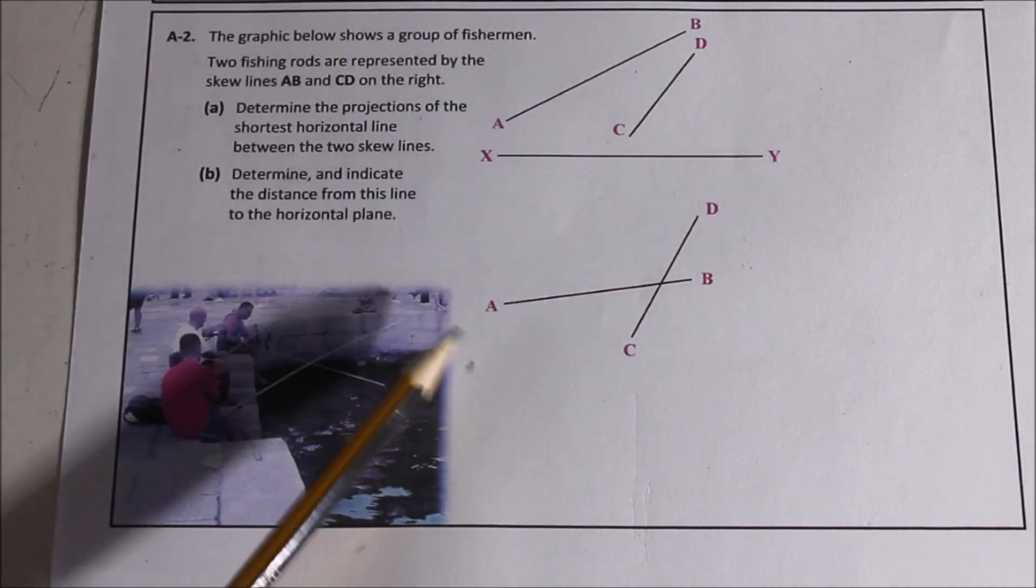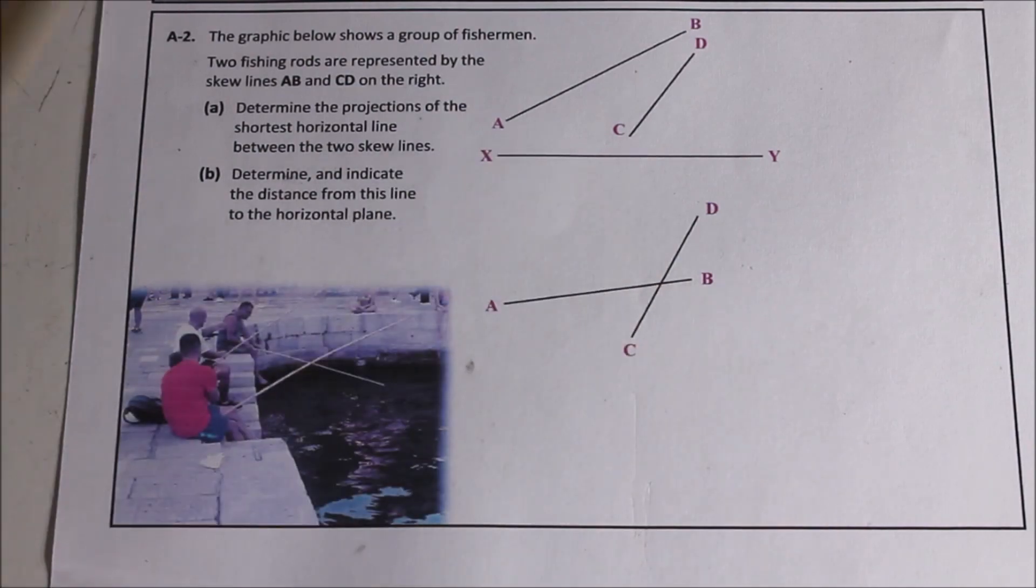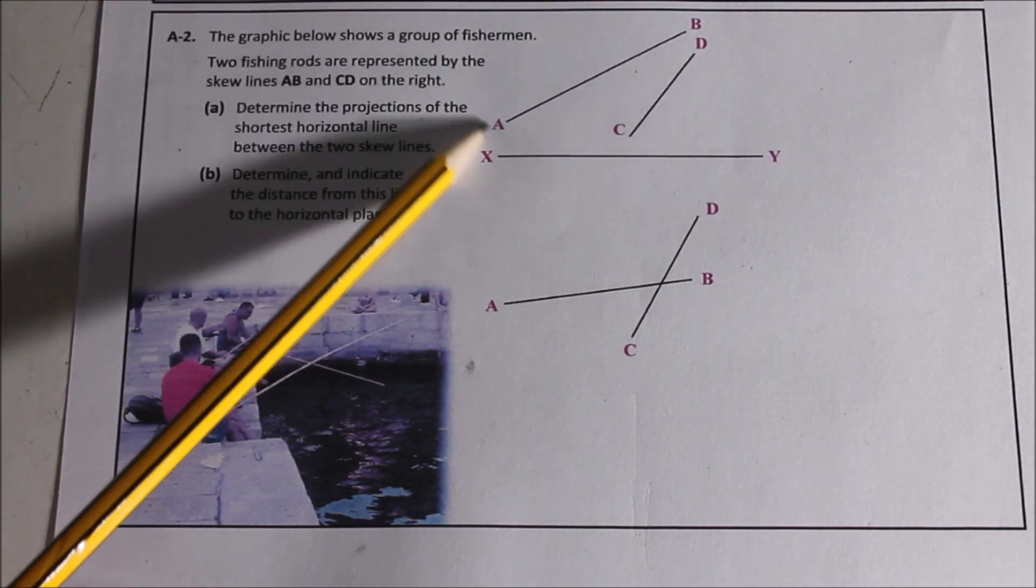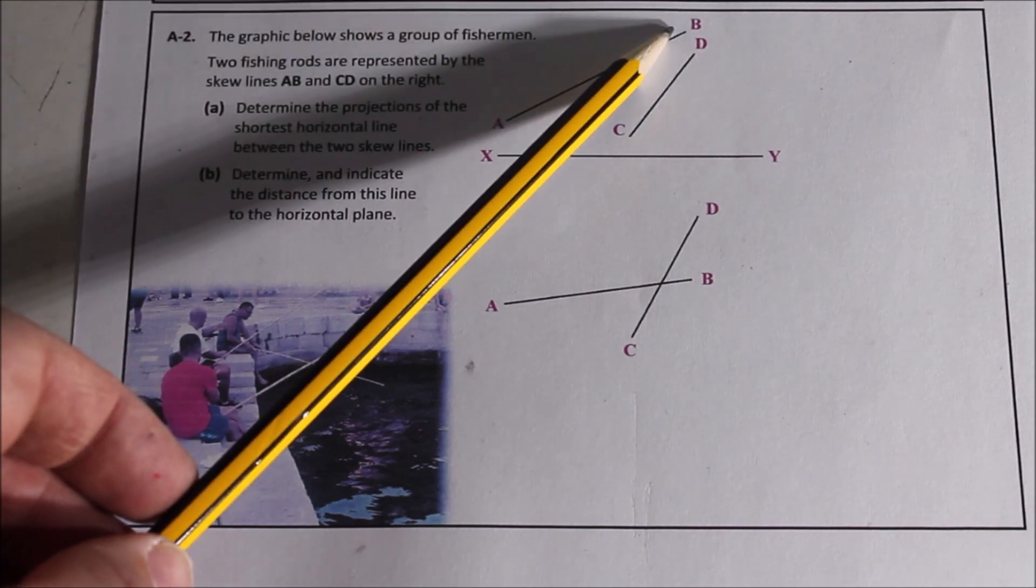CD to A going up this direction, bring it down. Lovely. And then our true length line is going this way. So what we're doing is bringing one skew line to the edge or to the point of the other, and then draw a horizontal line from the other edge to meet that.